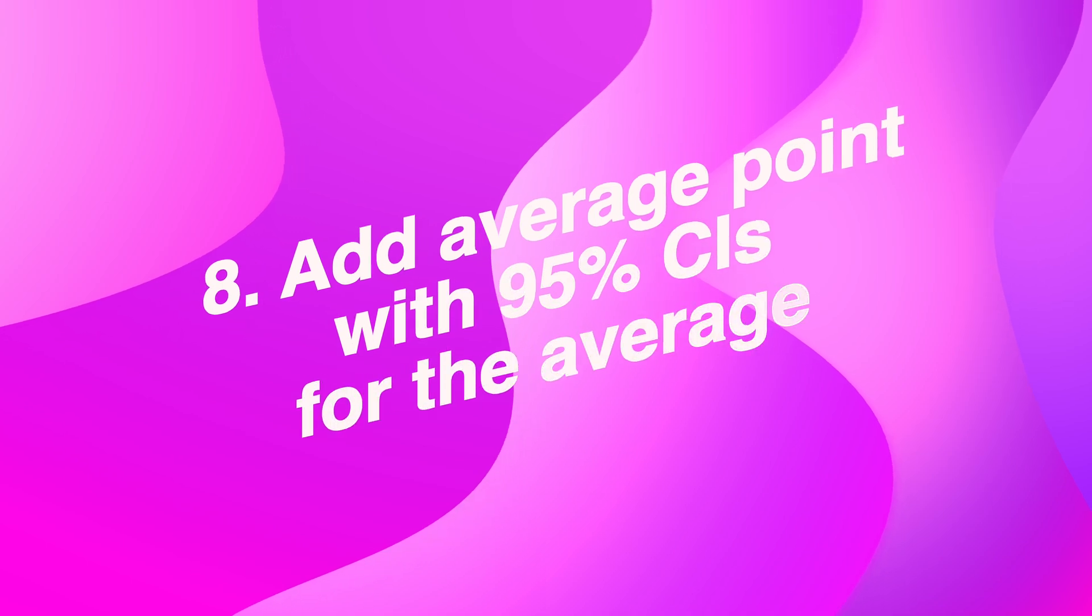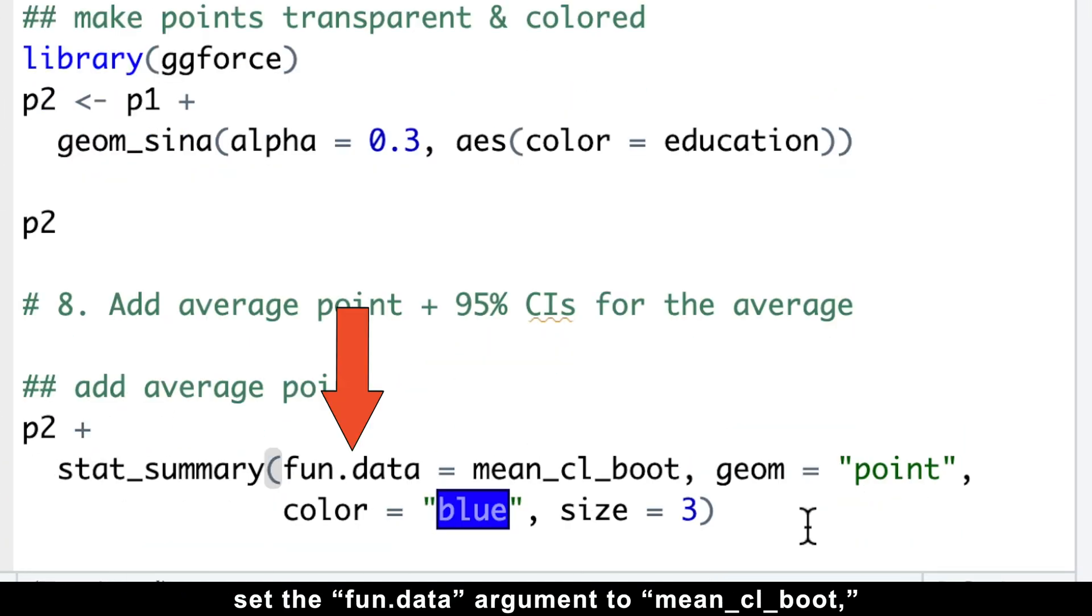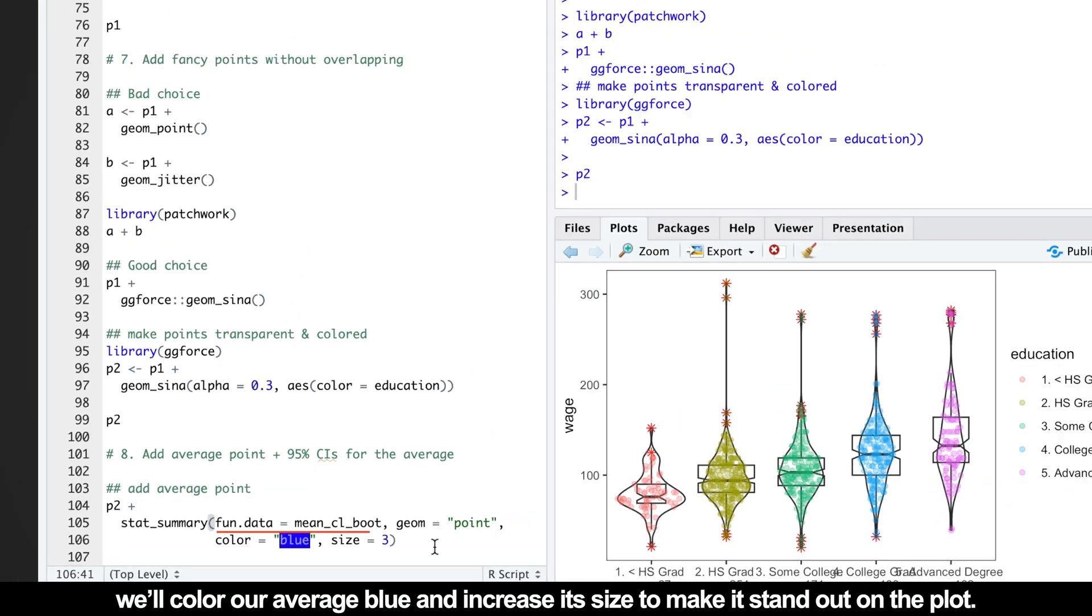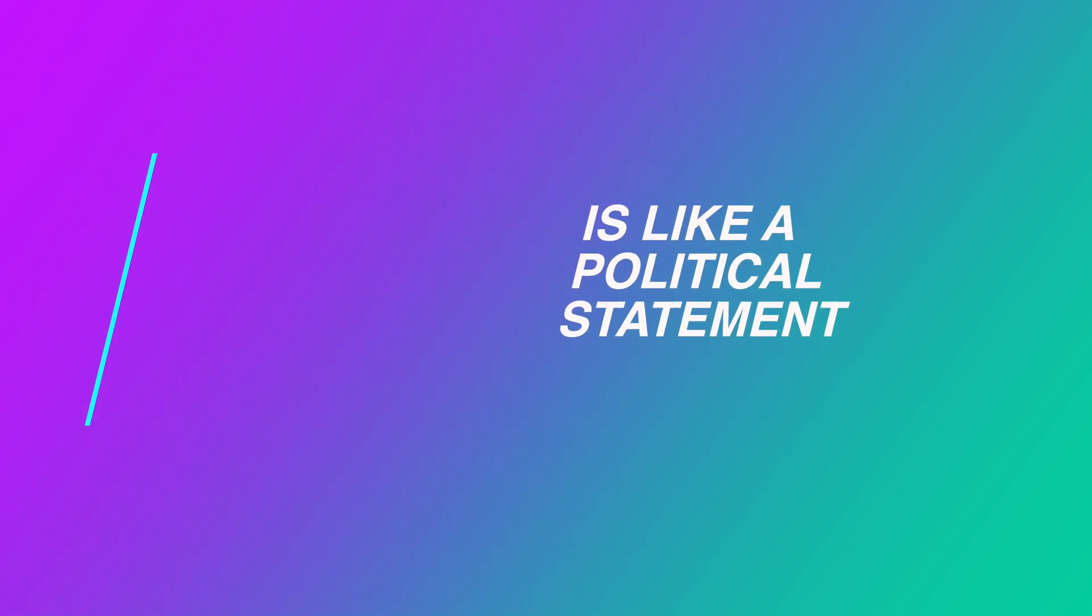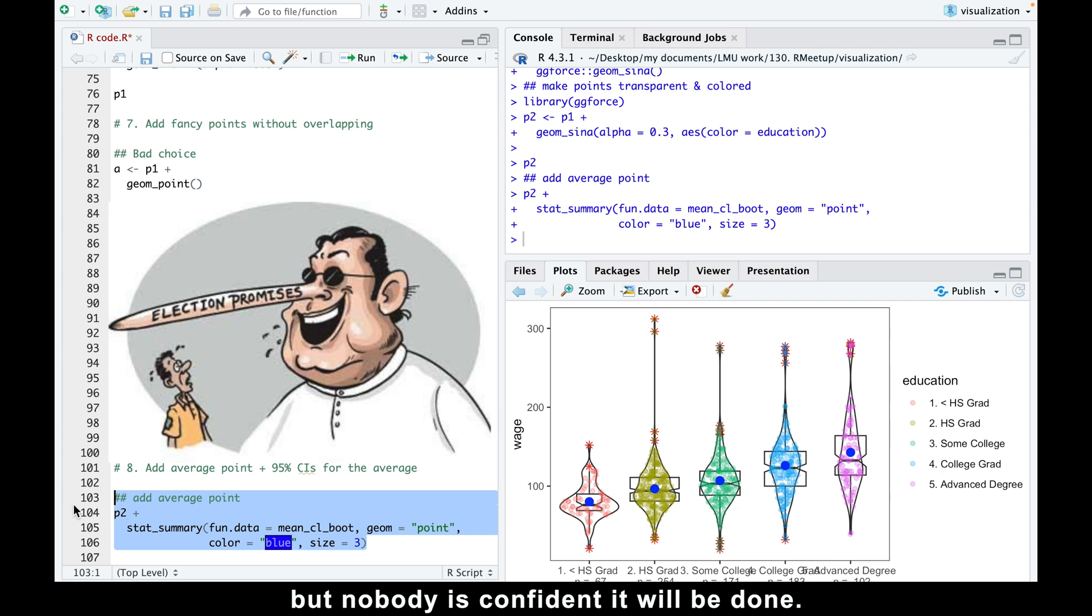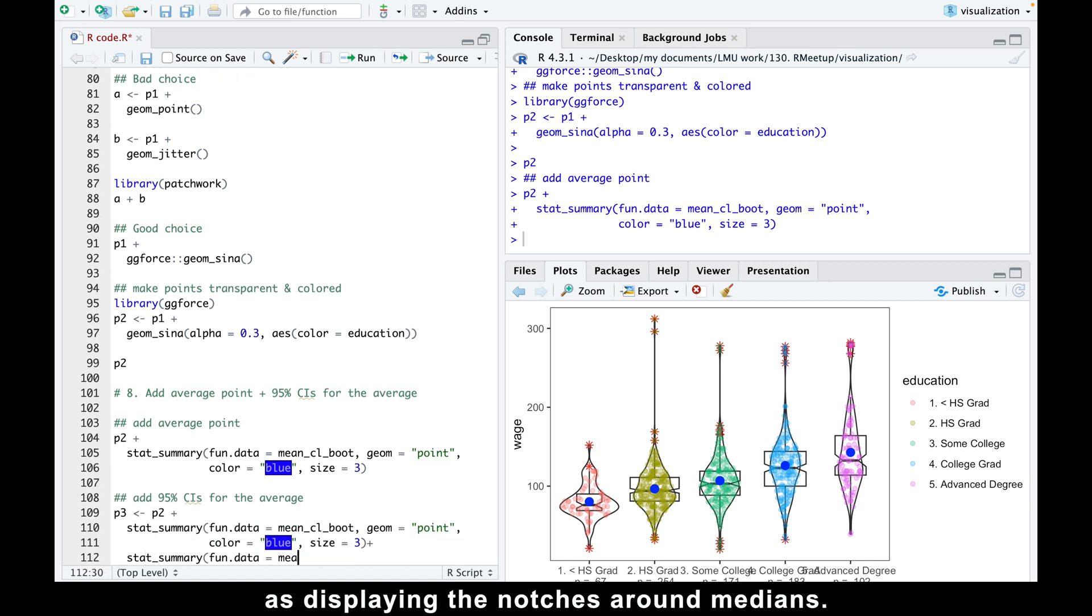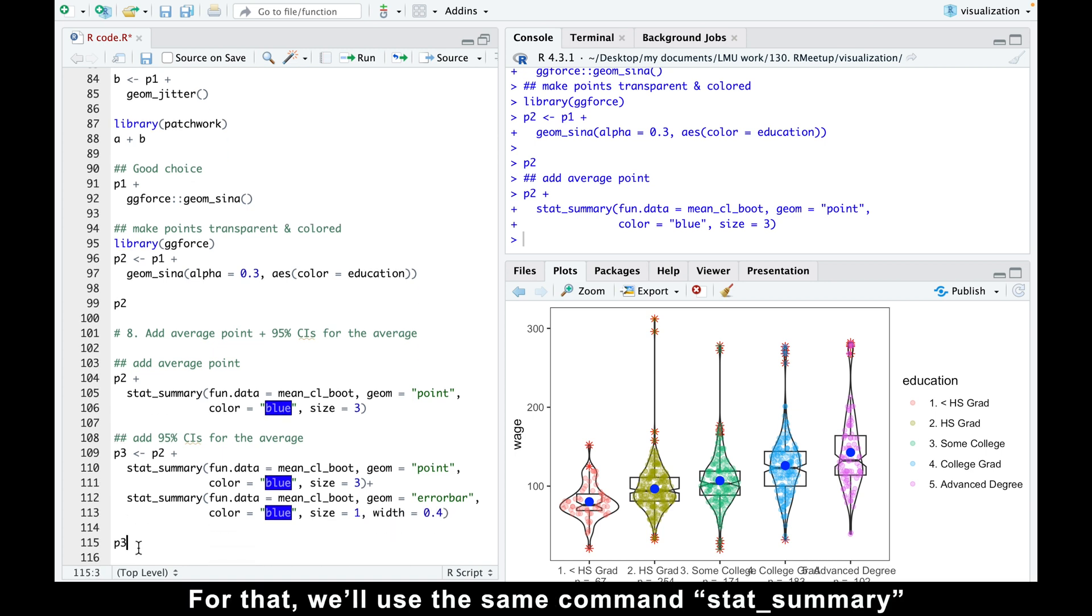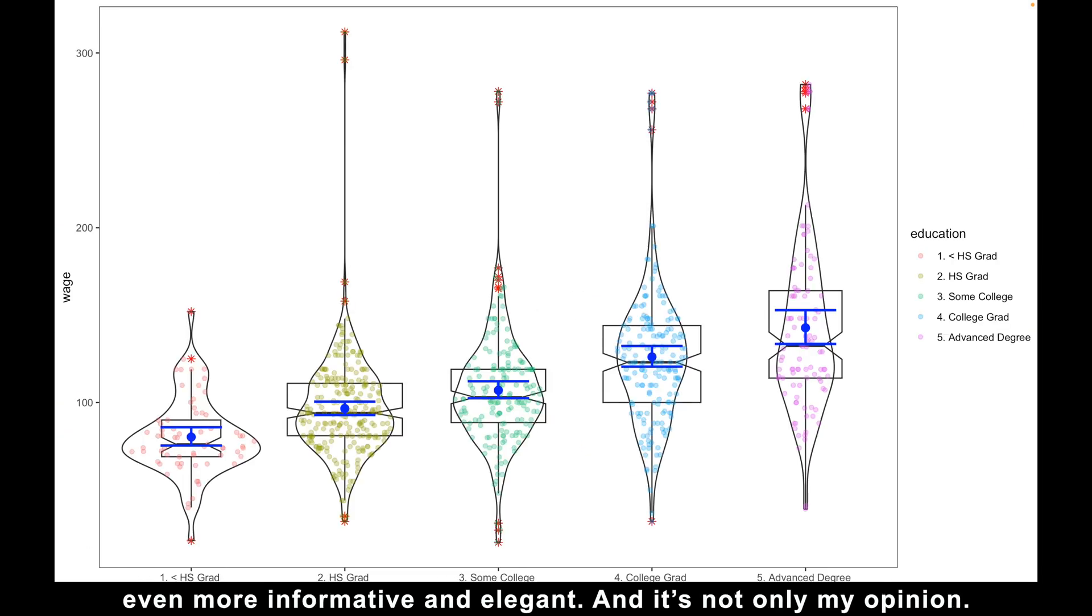Having all those beautiful points is amazing. However, one of the most important points is still missing. The average. To display the mean, we'll use the stat_summary function, set the fun.data argument to mean_cl_boot, and the geom argument to point. And finally, we'll color our average blue and increase its size to make it stand out on the plot. However, an average without confidence intervals is like a political statement. Sounds very confident, but nobody is confident it will be done. So, displaying confidence intervals around the mean, is as important as displaying the notches around medians. For it we'll use the same command, stat_summary, with a new argument, geom equals error bar. Adding the average with 95% confidence intervals makes any plot even more informative and elegant.